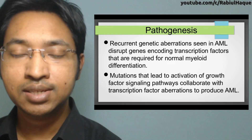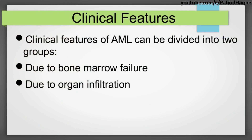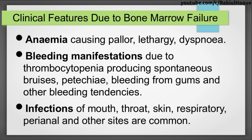Clinical features of AML can be divided into two groups: features due to bone marrow failure and features due to organ infiltration. Regarding bone marrow failure: there will be anemia causing pallor, lethargy, and dyspnea; bleeding manifestations due to thrombocytopenia producing spontaneous bruises, petechiae, and gum bleeding; and infections will be very common because normal functioning white blood cells are reduced.